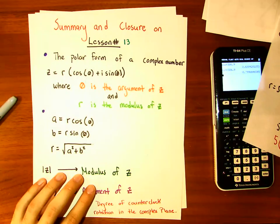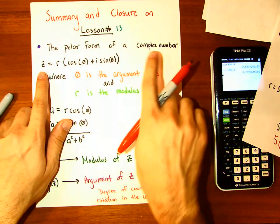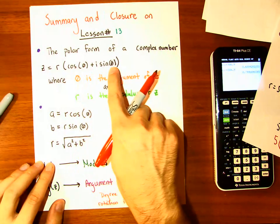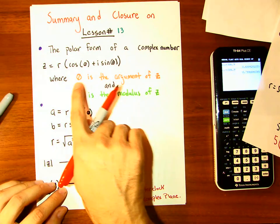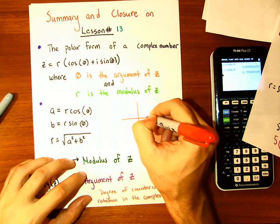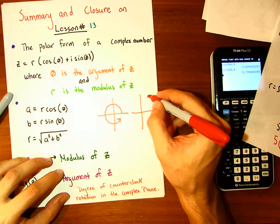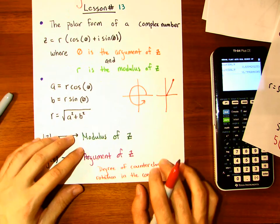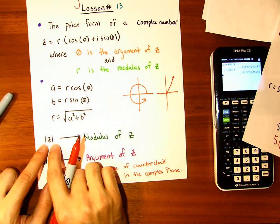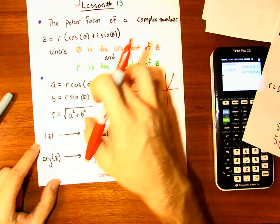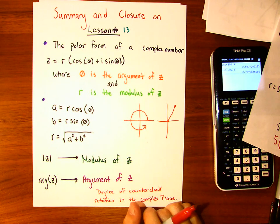Take a moment to reflect on everything we've done in lesson 13. The polar form of a complex number z is r cosine theta plus i sine theta, where theta is the argument of z and r is the modulus of z. The argument is the degree of rotation, and the modulus is the distance from the point to the origin. We also have: a equals r cosine theta, b equals r sine theta, and r equals the modulus of z.